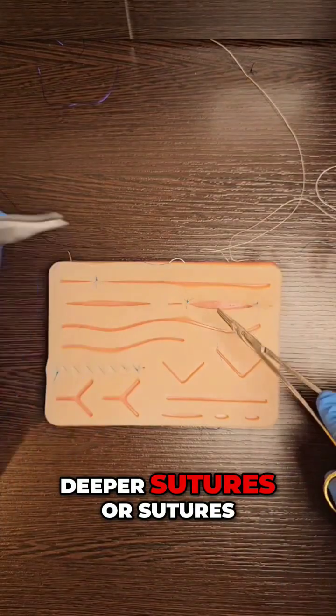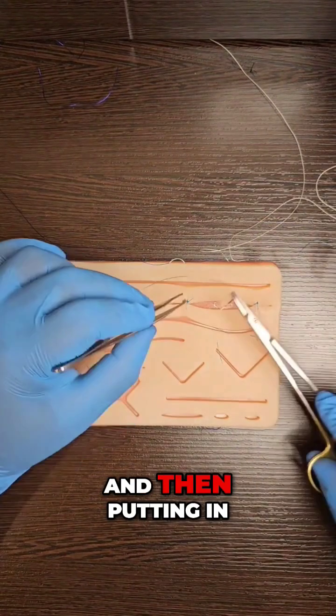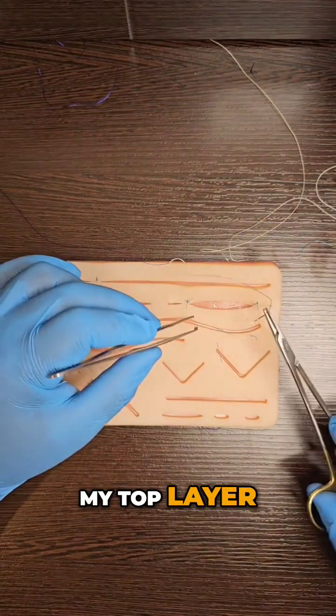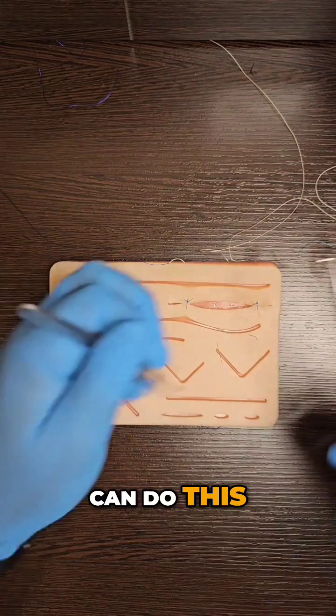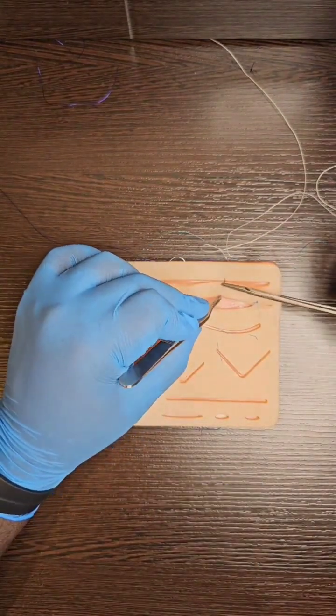Sutures on top that will take off the tension and then putting in my top layer. So there are two ways in which I can do this. The first way is to just take a big suture like this.